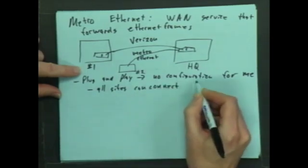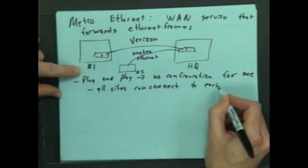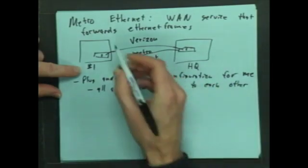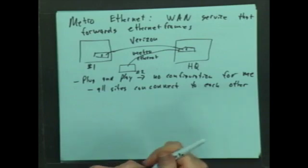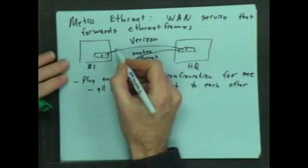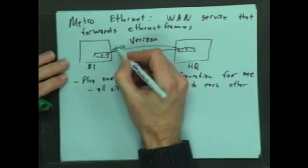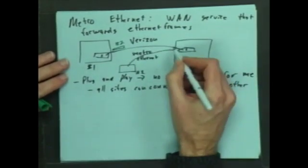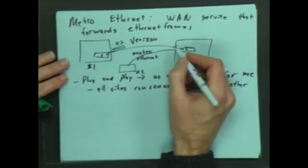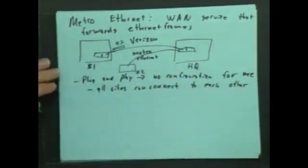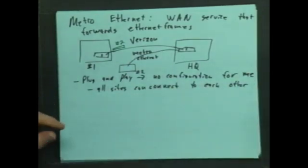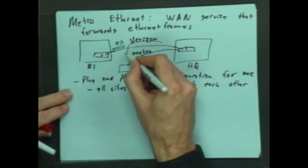So if I send a frame out here, this destination is number two. Verizon's Metro Ethernet actually treats this like a cloud. I should draw a cloud here. I should have drawn a cloud in the first place, sorry.